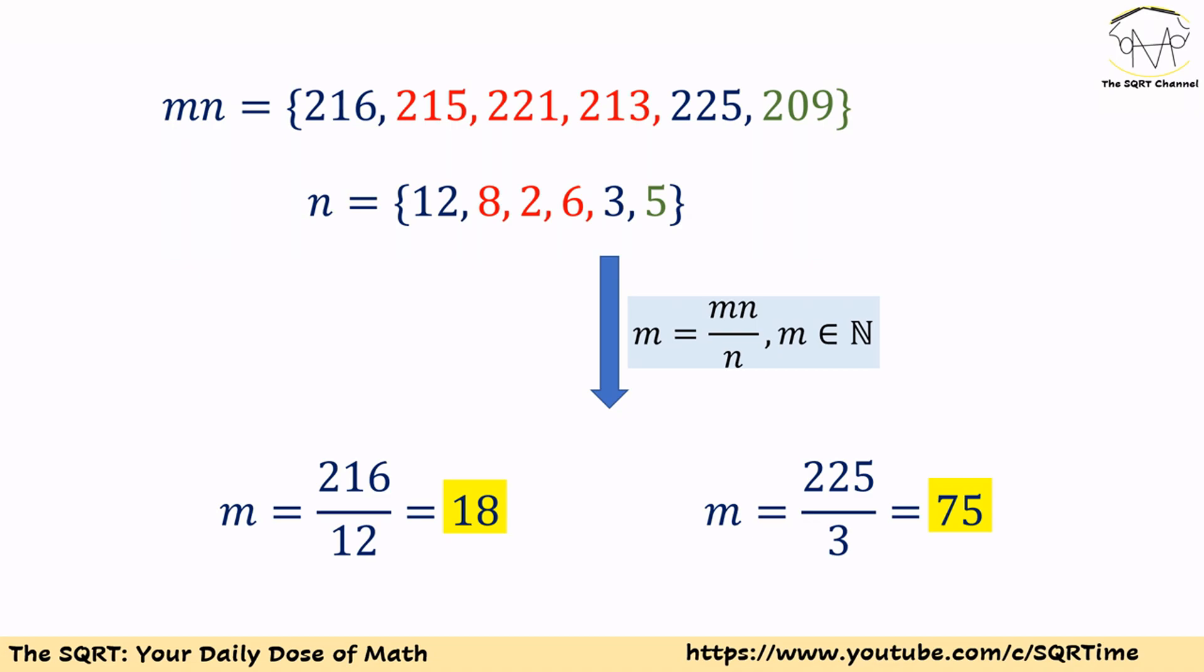Now that we have the values for mn and also n, we want to find the values we can have for m. m can be defined as mn/n and m is going to be a positive integer number. As a result, when we have 8, 2, or 6 for n, we need to have an even number for mn, which is not the case here, so 215, 221, and 213 are out. Similarly, when we have 209 for mn and 5 for n, we cannot find a positive integer number for m, so that one is out too.